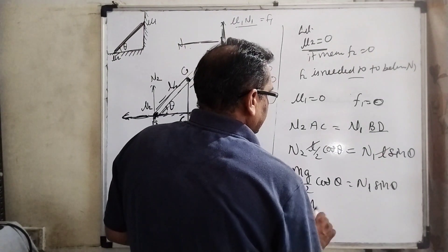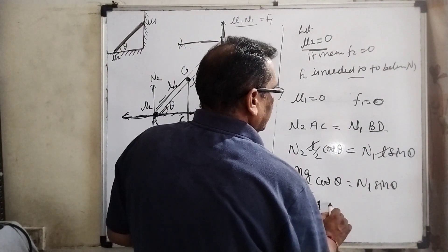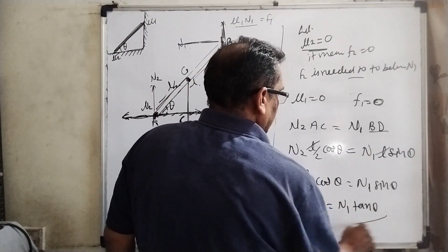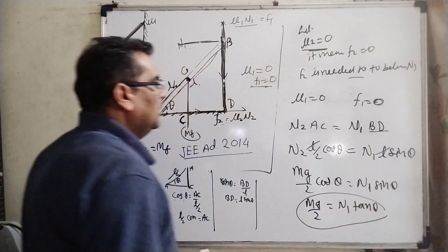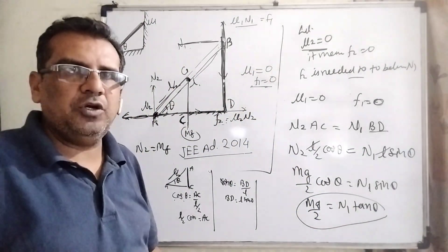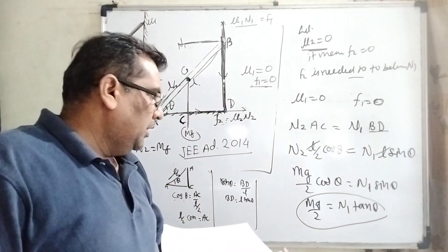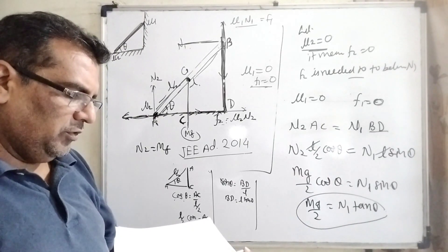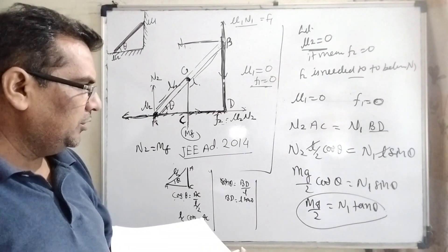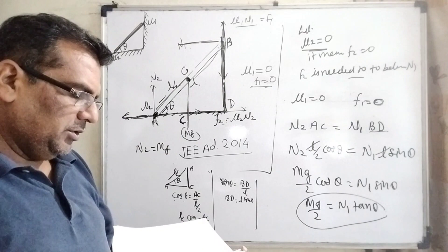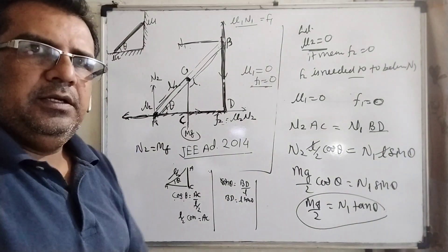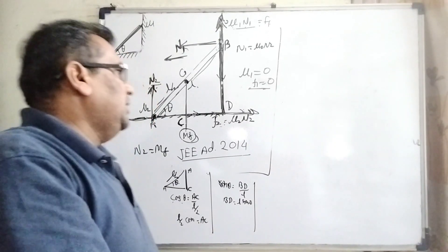Now it can be written as mg by 2 equals N1 tan theta. So let's see which option matches here. Option D is given: mu1 equals 0, mu2 not equal to 0, and N1 tan theta equals mg by 2. Means option D is correct.